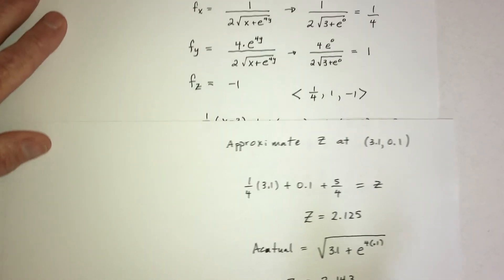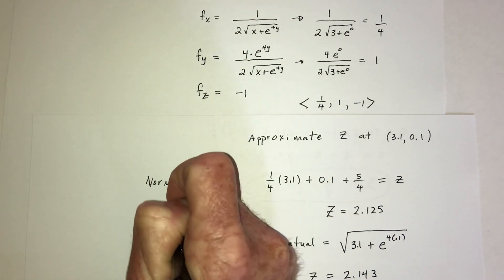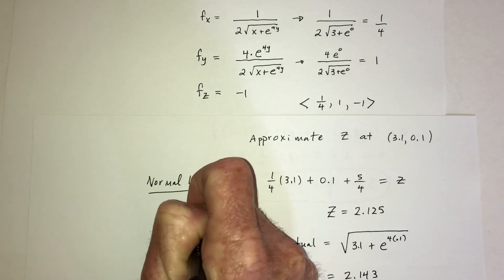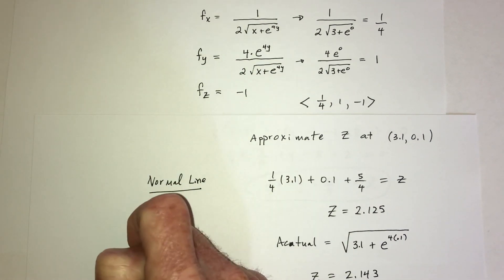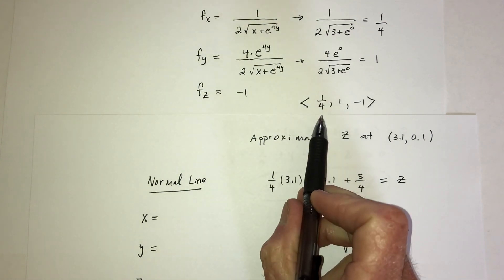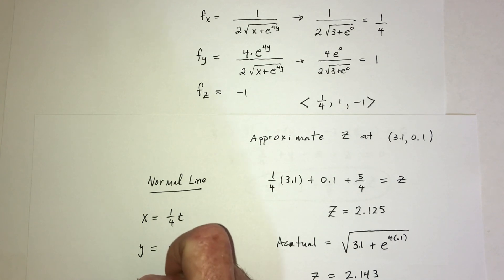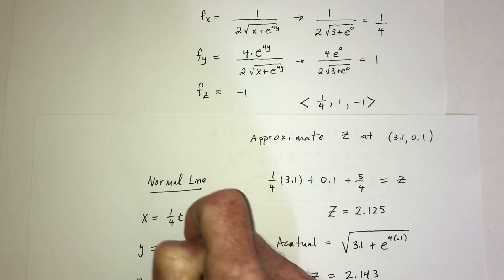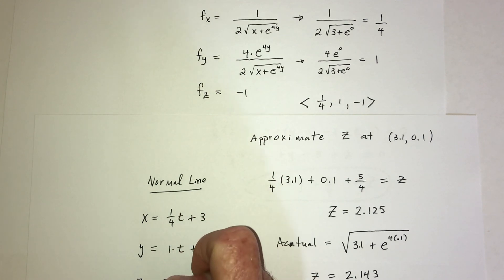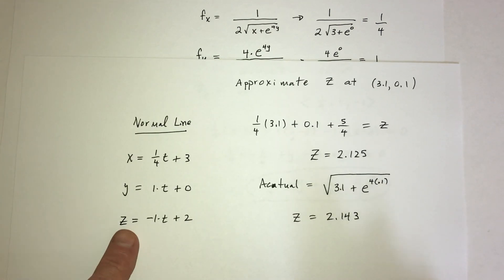The last part is the normal line for example 3 in parametric form: x = (1/4)t + 3, y = t + 0, z = −t + 2. Take the numbers from the gradient vector (1/4, 1, −1) in front of t, and add the original point (3, 0, 2).